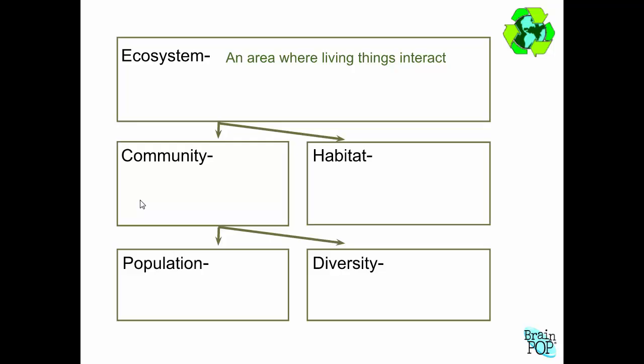An ecosystem is a large or small area where you have a bunch of living organisms interacting with non-living things. Some ecosystems are huge, like the ocean ecosystem or a desert ecosystem. But we can also think about small areas as an ecosystem — a puddle with tiny plants and animals, or a rotting log has its own ecosystem. We can think about this courtyard in our school — that's its own small ecosystem, with a variety of living things and important non-living factors.